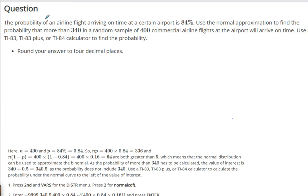So we have the probability of an airline flight arriving on time at a certain airport is 84%. Use the normal approximation to find the probability that more than 340 in a random sample of 400 commercial airline flights at the airport will arrive on time. Use your calculator. Of course I'm using my calculator. Now I know that I'm going to do the binomial stuff. I'm going to call it the binomial stuff, the extra stuff, extra spice, extra crap, because I'm not given a mean and there's no standard deviation given. And I'm given a sample, so there's an indication that you have to do the extra stuff that comes from the binomial.